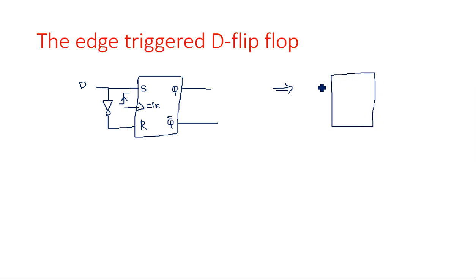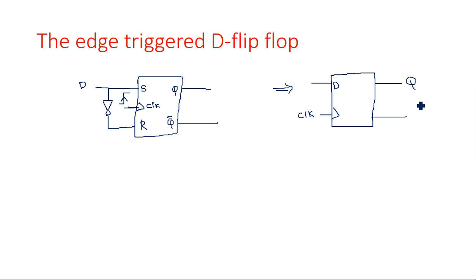To show the SR flip-flop more simply, the D flip-flop has one input D and the other input is the clock signal, with two outputs Q and Q-bar.